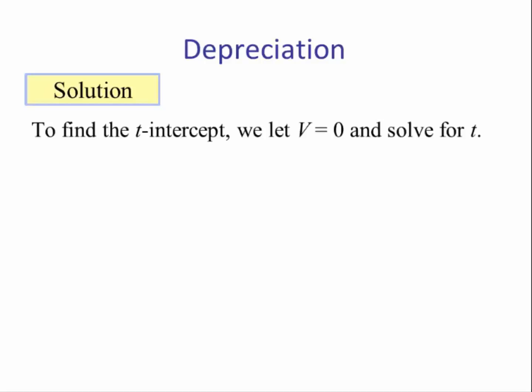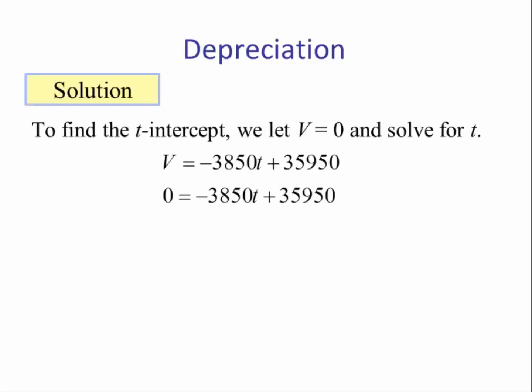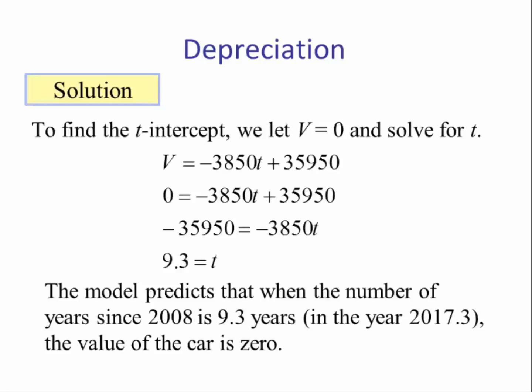Next, we find the T-intercept by letting V = 0 and solving for T. Our equation is V = negative 3,850T + 35,950. Setting V = 0, we subtract 35,950 from both sides, then divide by negative 3,850, giving T ≈ 9.3. In terms of this problem, the model predicts that when the number of years since 2008 is about 9.3 years — in the year 2017.3 — the value of the car is $0.